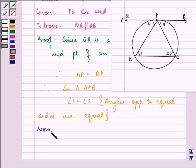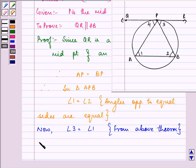Now, we know that angle 3 is equal to angle 1. This we can say from above theorem that we have proved. So from these two equations, we can say that angle 2 is equal to angle 3.